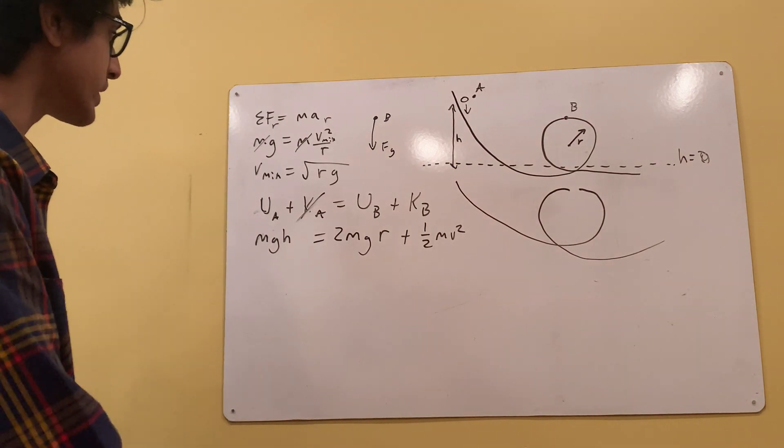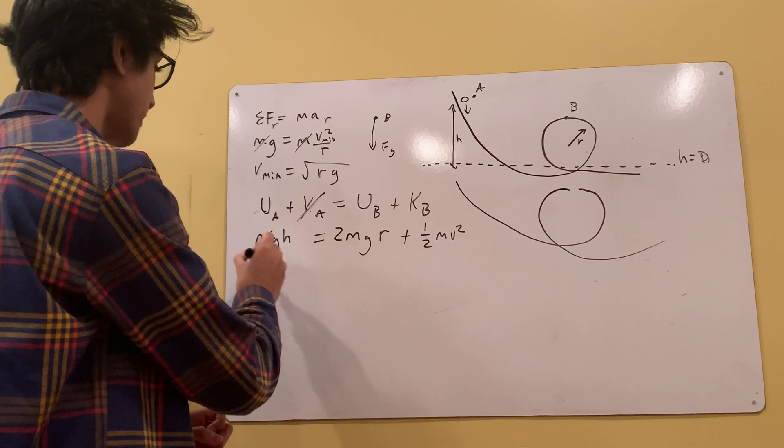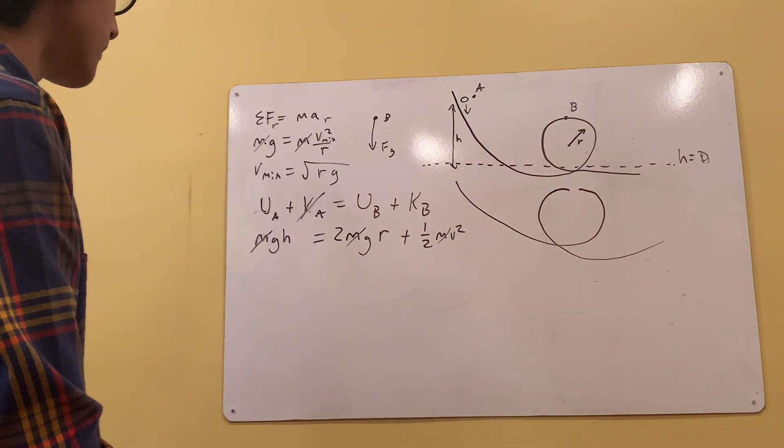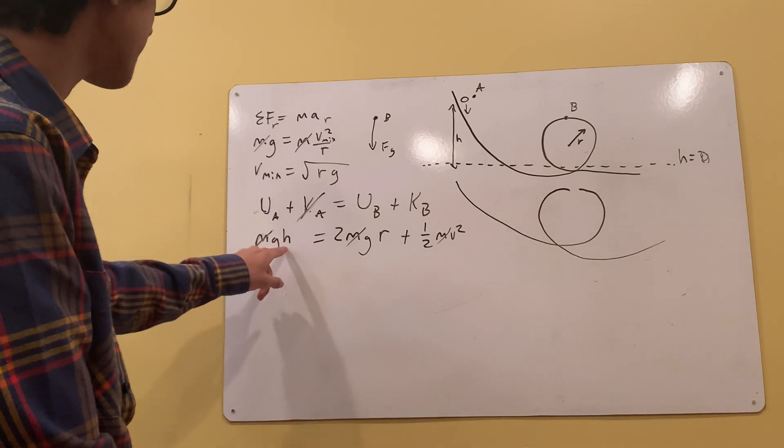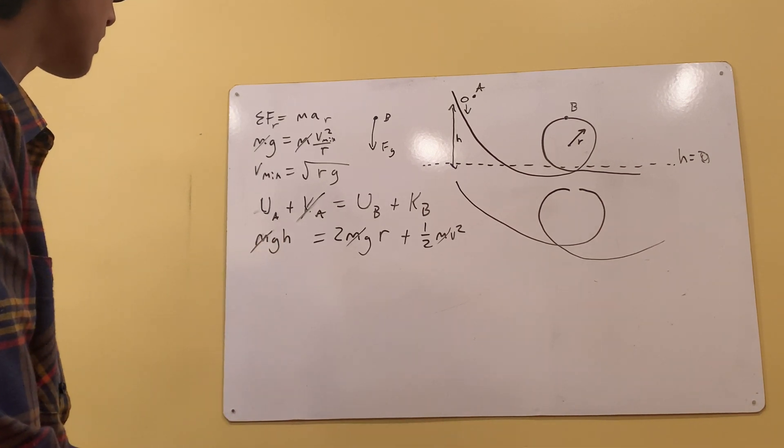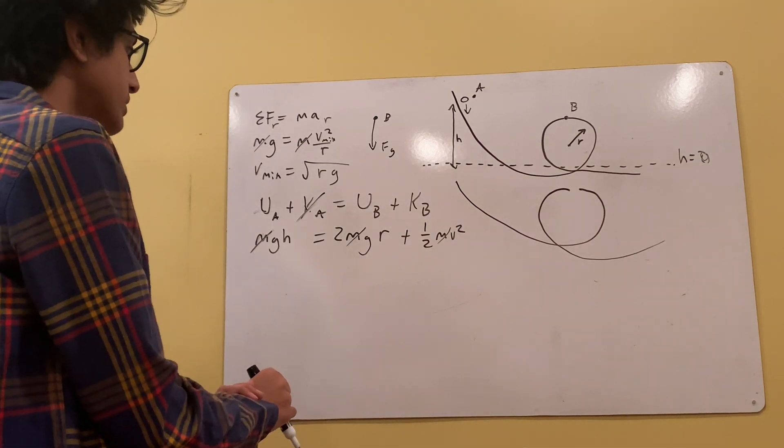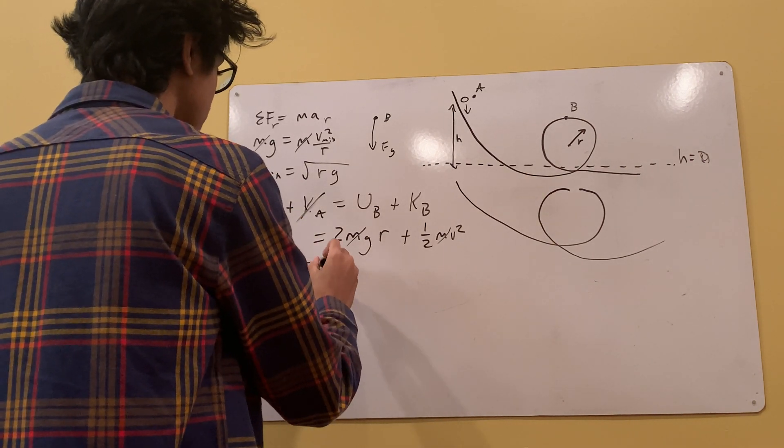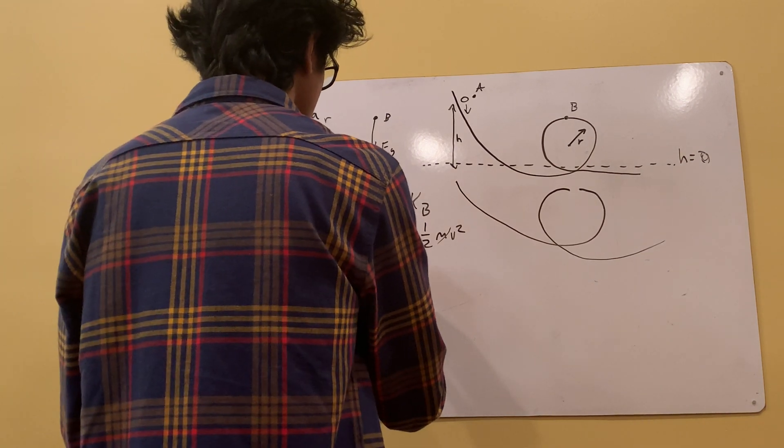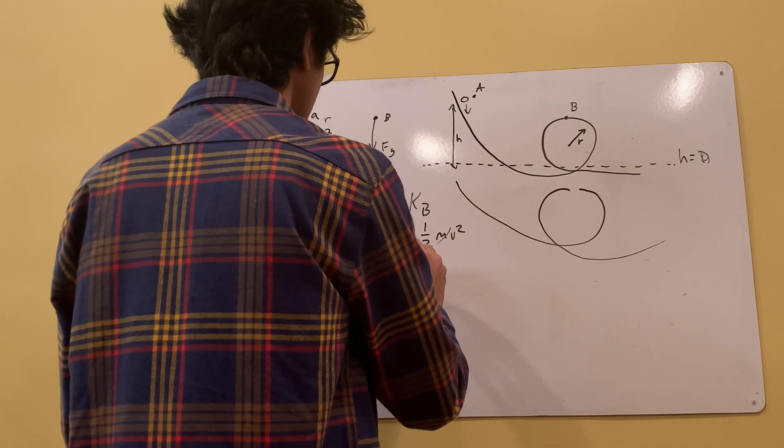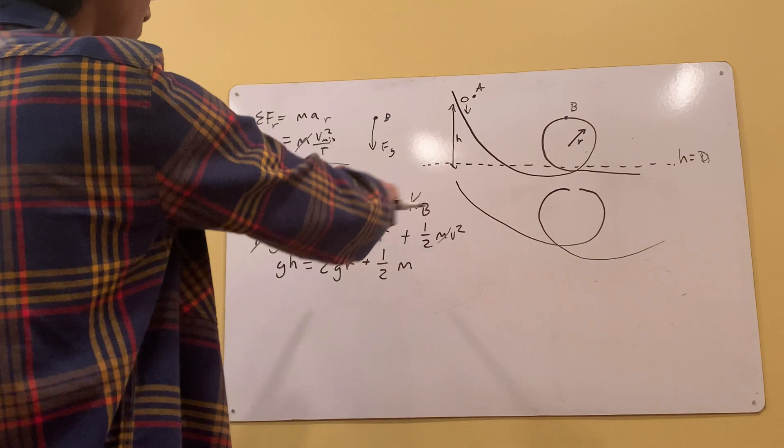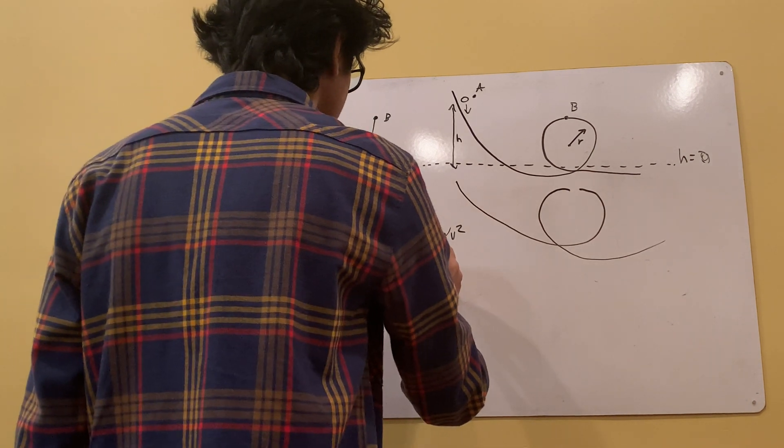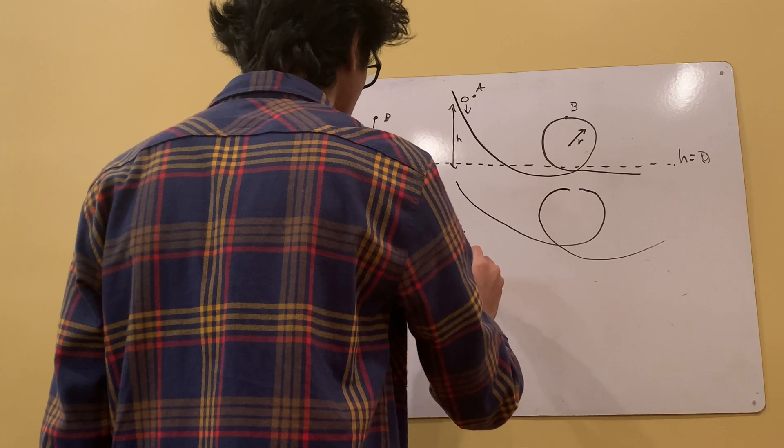Alright. Now we can start simplifying this. Let's cancel out some m's. There's an m on everything, cancel that out. What else could we do? We need to solve for this H, right? How about... So first, actually, let's write this. We have G times H is equal to 2GR plus 1 half. And we found the velocity at that point will be equal to that. So let's throw this Vmin into this V. It's equal to the square root of Rg. And that's squared. That's perfect, because that'll cancel out perfectly.